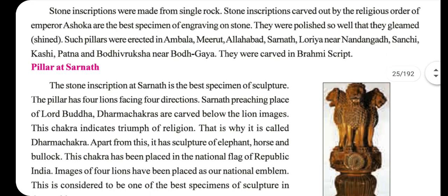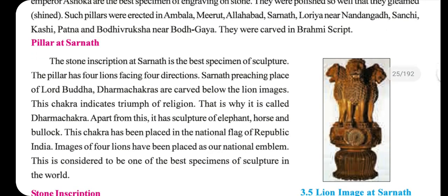The pillar at Sarnath is considered the best specimen of sculpture. The pillar has four lions facing four directions. Sarnath was the preaching place of Lord Buddha, and Dharma Chakras are carved below the lion images. This chakra indicates the triumph of religion, which is why it is also known as the Dharma Chakra.